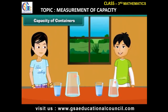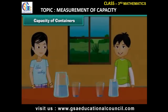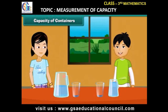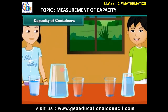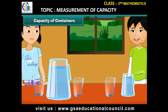Capacity of containers: Maria pours one glass of water in her jug. When John pours one glass of water in his jug, it looks different. Maria thinks she will have to pour around two glasses of water to fill her jug, while John thinks he will have to pour one glass of water to fill his jug. Can you tell whose jug holds more water? Yes, Maria's jug holds more water.